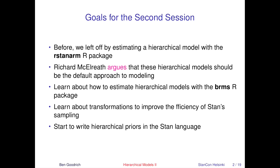Goals for the second half: we left off having done a hierarchical model with the rstanarm package. Richard McElreath, who is giving a talk tomorrow and has written a book, really argues forcefully that hierarchical models ought to be the default way of approaching Bayesian modeling. It wouldn't make sense in most situations to use a non-hierarchical model, because there's always going to be some heterogeneity you'd want to take into account.